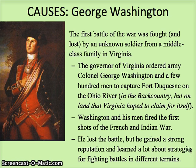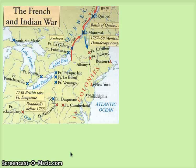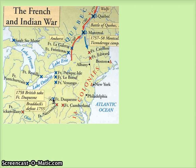In the 1750s, Washington was kind of a loser in battle, but by the 1770s he would become a very well-known and successful military general. This map shows where some of the battles occurred — there's Fort Duquesne, where Washington originally lost.